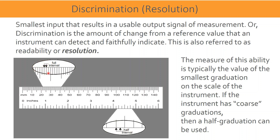As stated for the pressure gauge, the minimum value indicated — that smallest graduation value — is called the resolution. If the instrument has coarser graduations, then half of the graduation value can be taken for calculations in the measurement uncertainty.